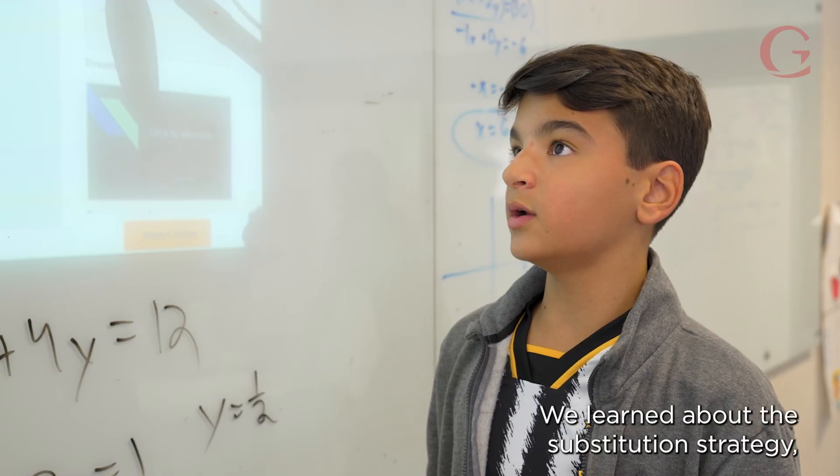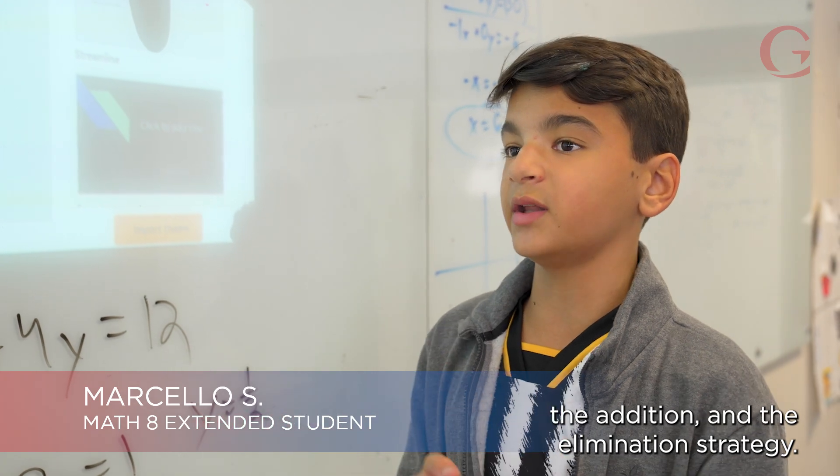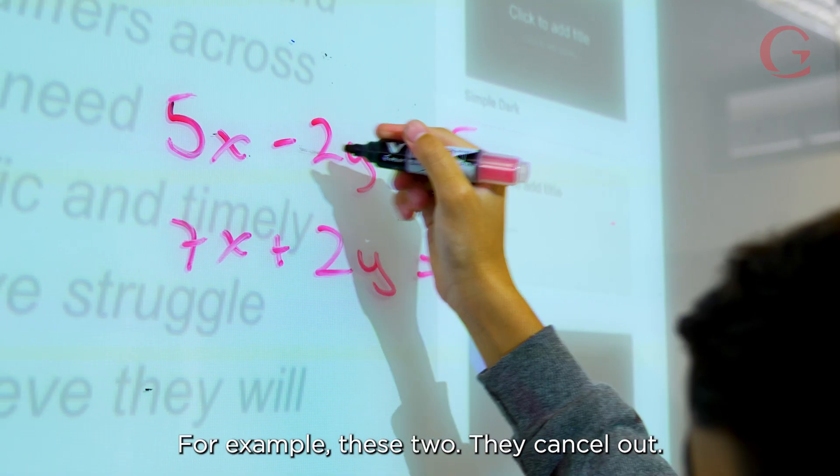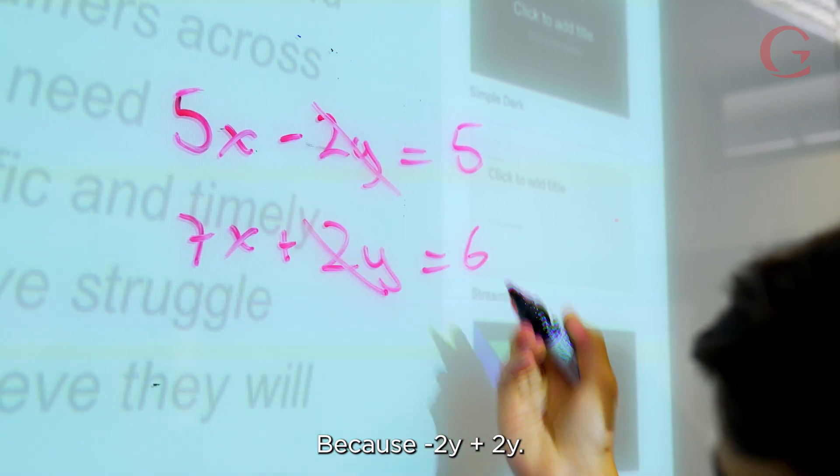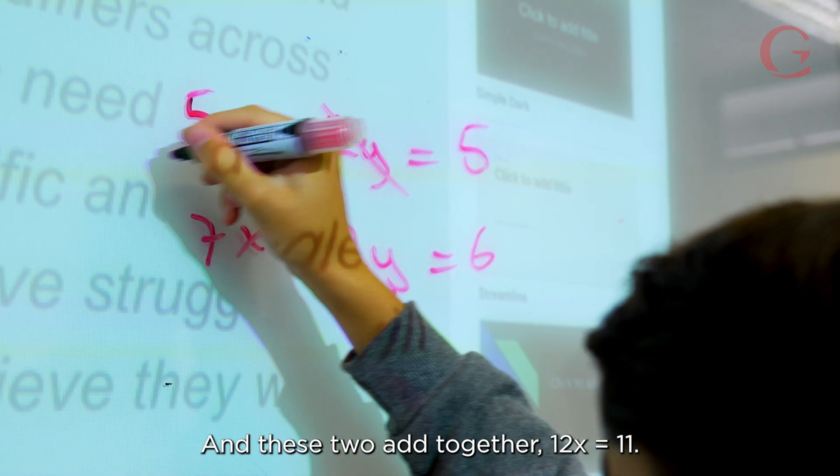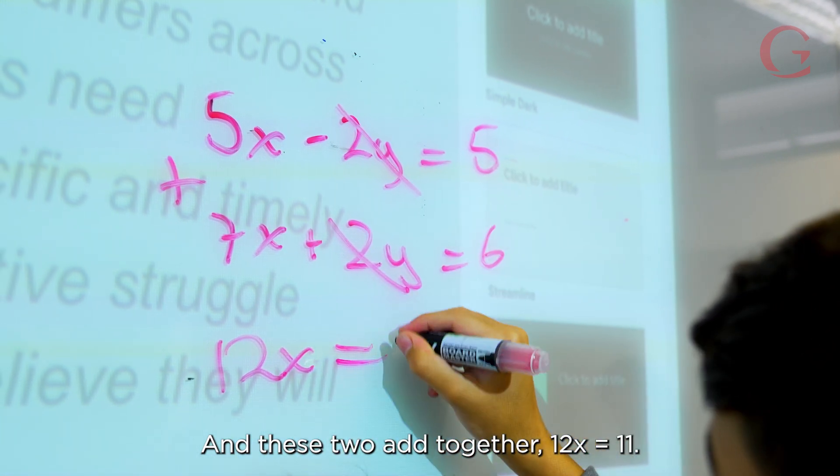We learned about the substitution strategy, the addition, and the elimination strategy. For example, these two, they cancel out because minus 2y and plus 2y. And these two add together, 12x equals 11.